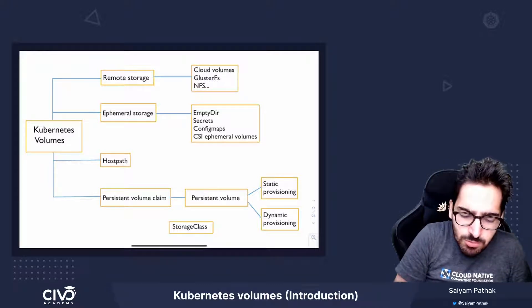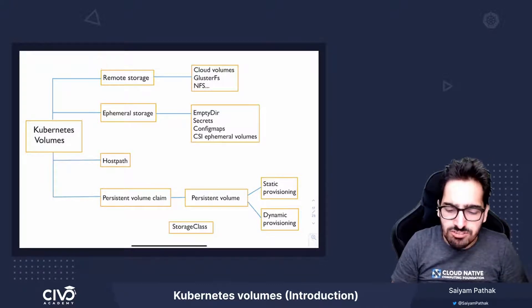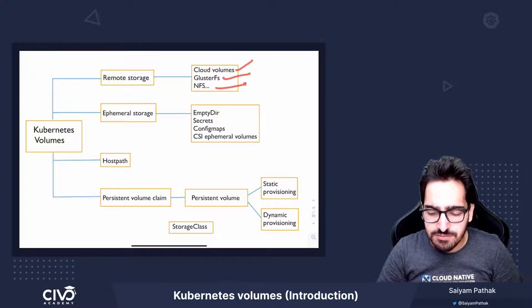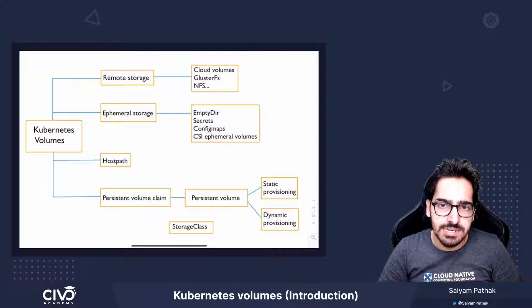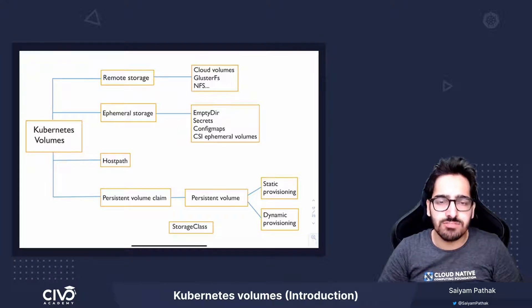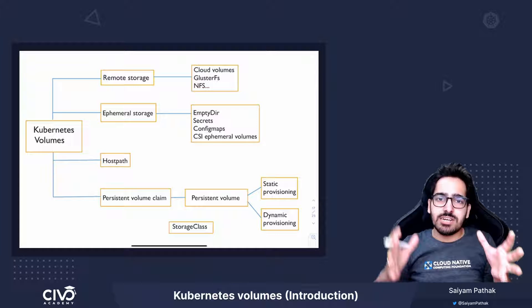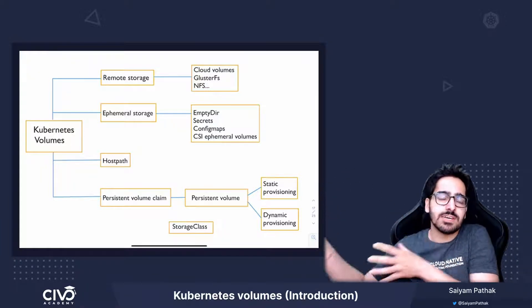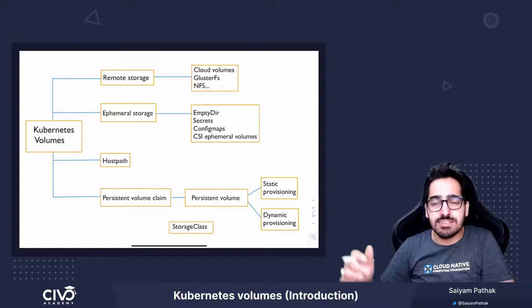We have remote storage. Remote storage can be the Cloud Volume plugins, ClusterFS, NFS. All these can be created as remote storage. You have an external storage which is outside of your cluster and your data can be saved there. So even if the cluster goes down, your data is still safe.